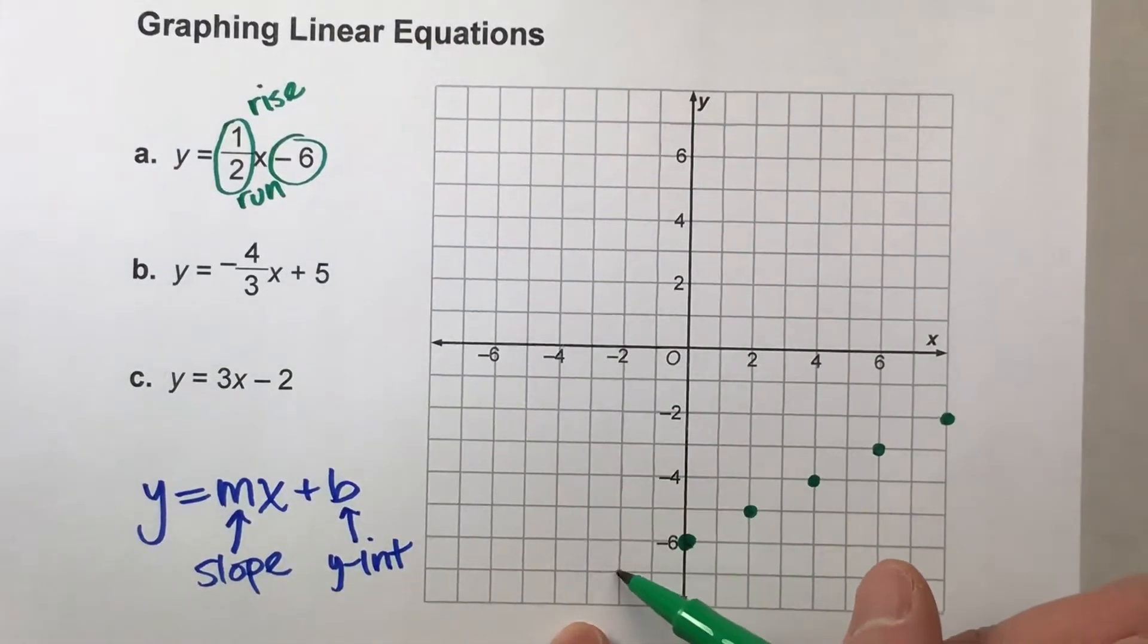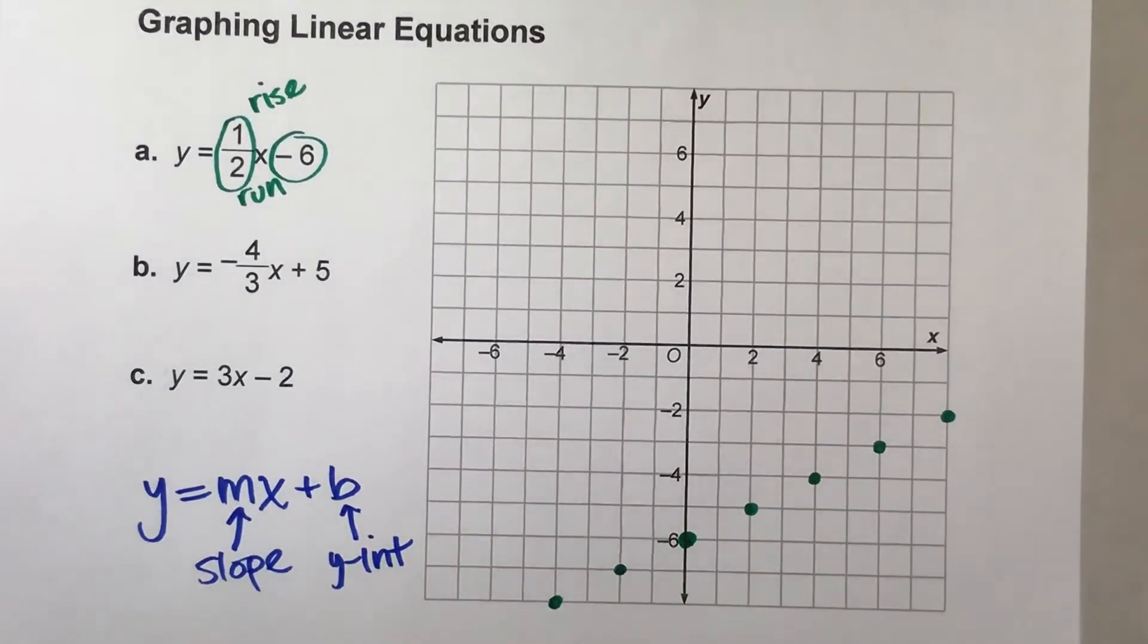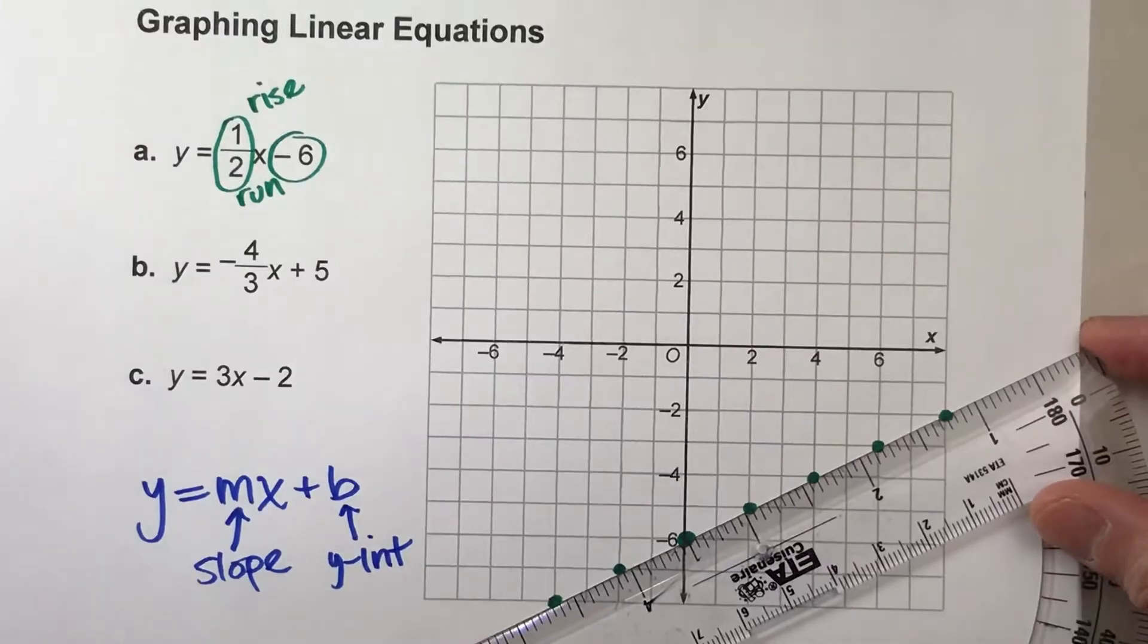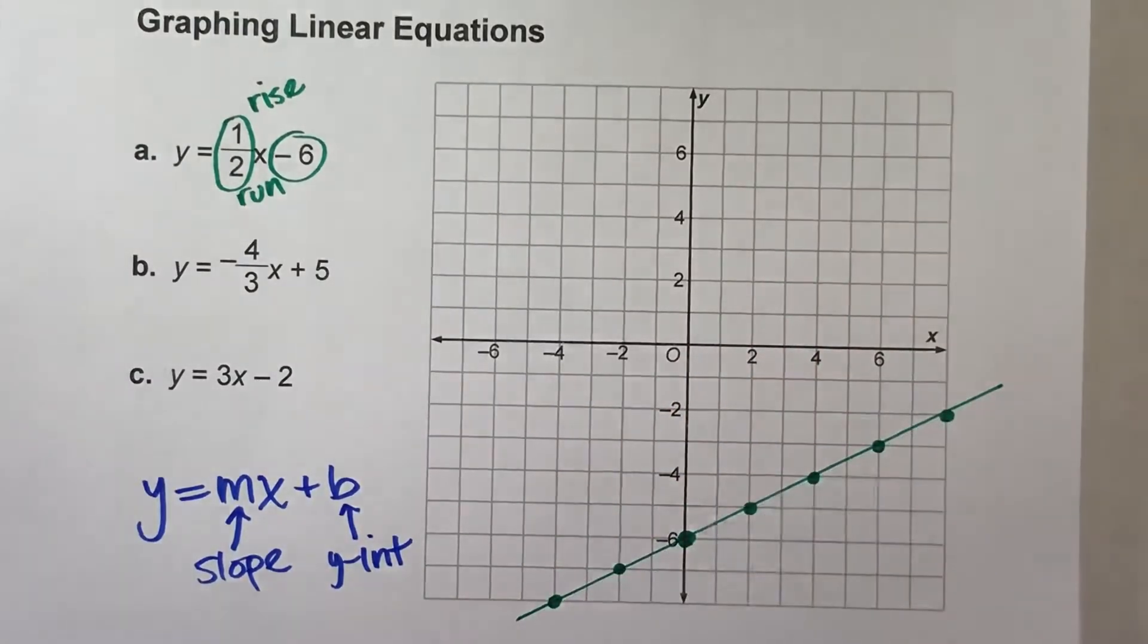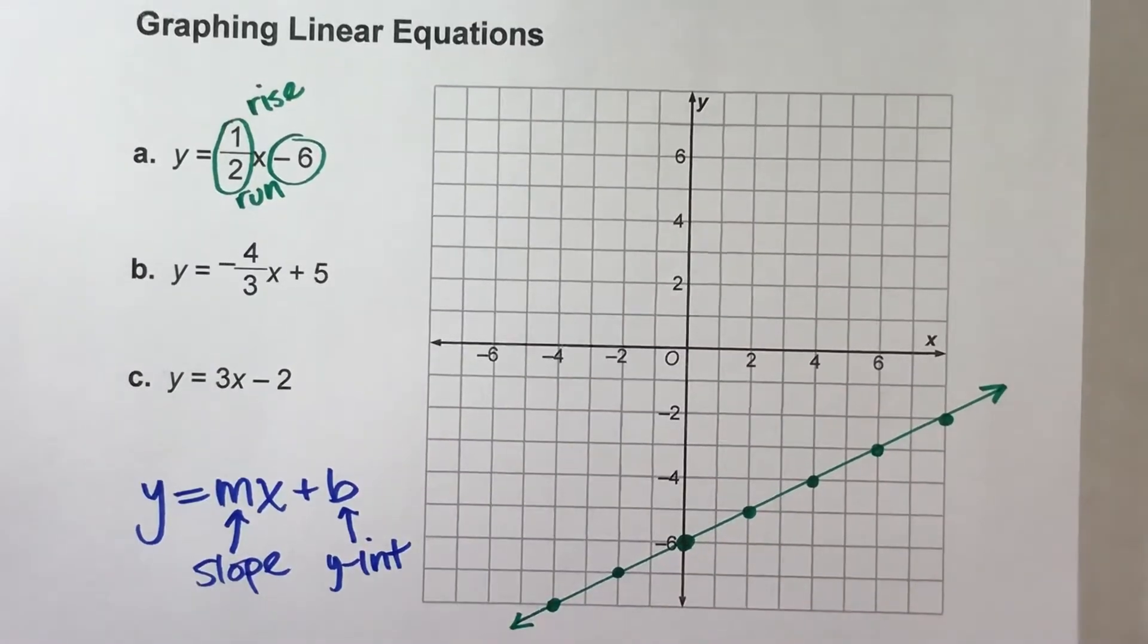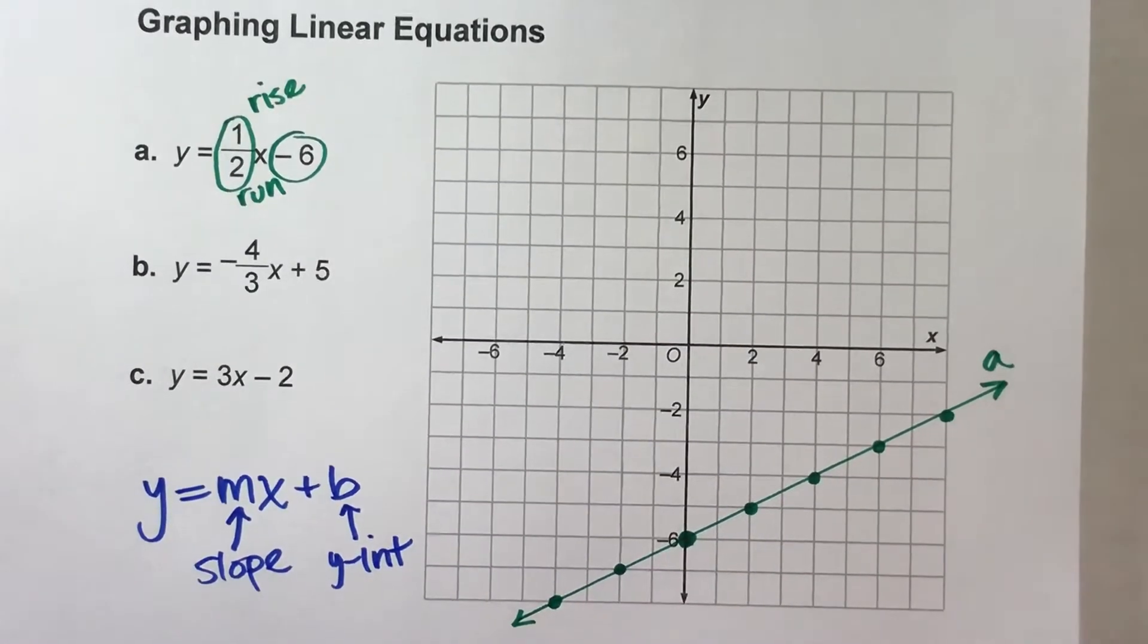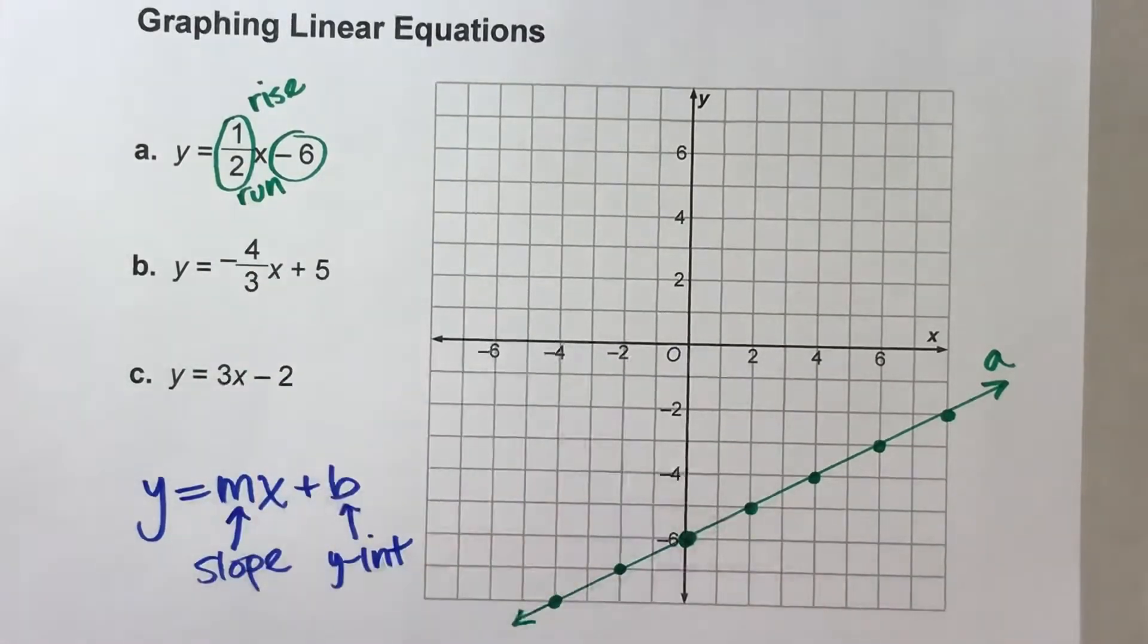And you should repeat it the other way, just so you can extend the line in both directions. But once you've done that, you can use a straight edge, draw your line through them all, and then I like to put arrows on the ends to show that it does go on forever. I'm even going to label it A so I know which one's which. So that's line A.